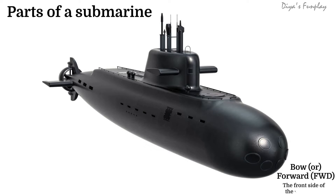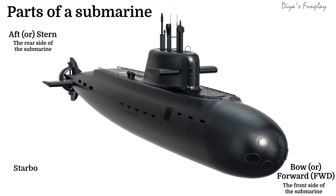Bow, or forward, is the front side of the submarine. Aft, or stern, is the rear side of the submarine. Starboard side is the right side of the submarine. Port side is the left side of the submarine.